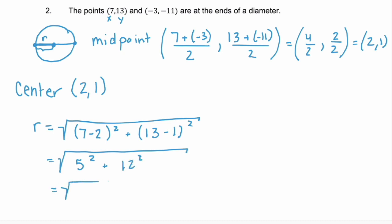So that equals the square root of 25 plus 144, which is the square root of 169, which is equal to 13. So I'll make a note up here by our center. Our radius equals 13.